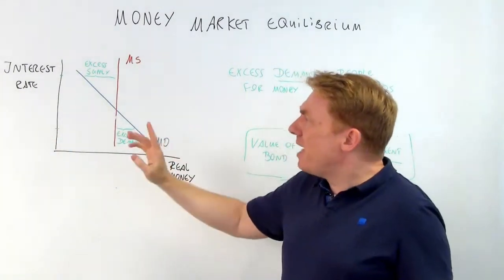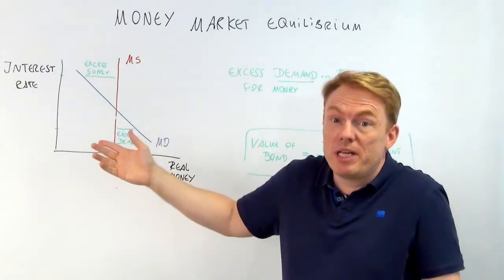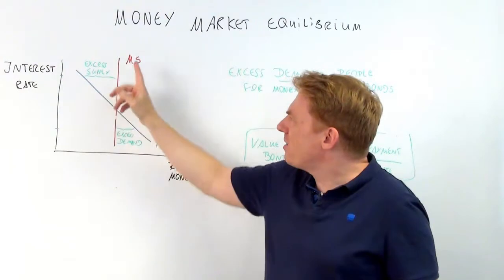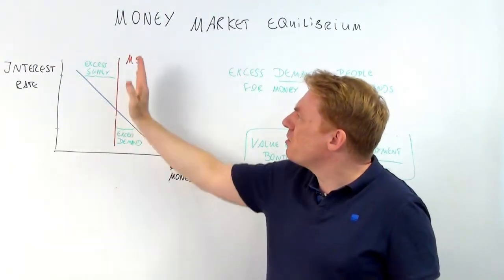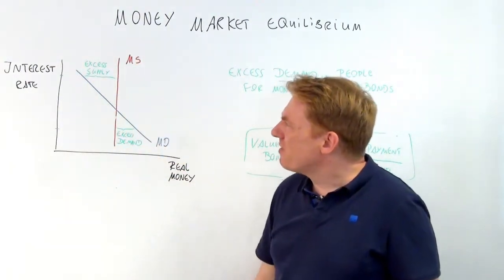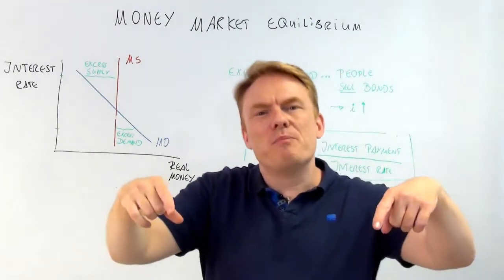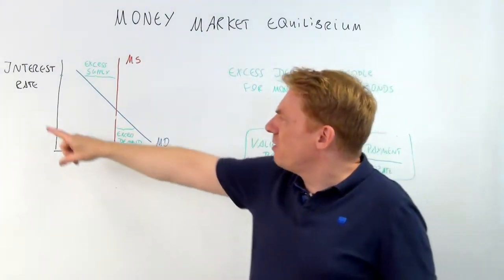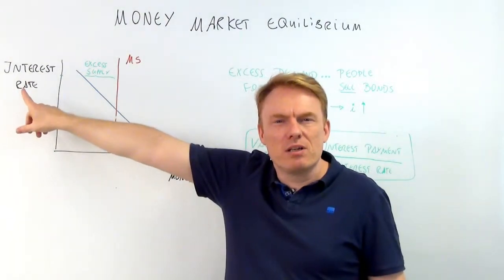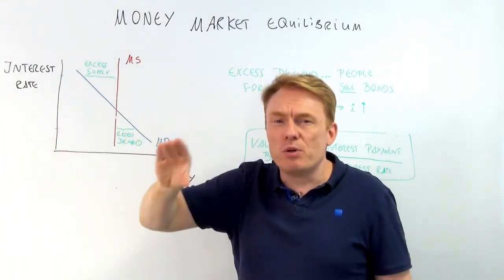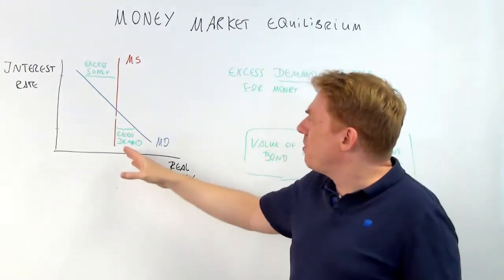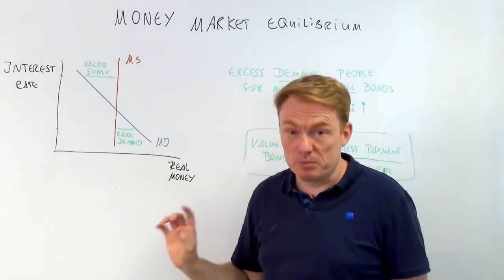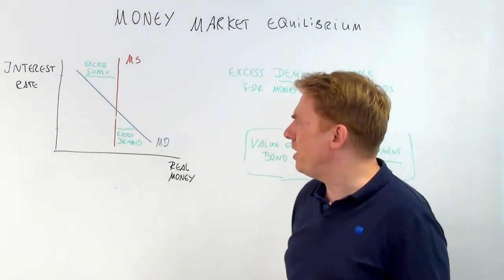There is no correlation at all between the interest rate and the supply of money. So the supply of money is, to put it in microeconomic terms, totally inelastic when it comes to the interest rate. Because whether the interest rate rises or goes down, there is no change at all in the supply of money. So the supply of money goes just this way — vertical.